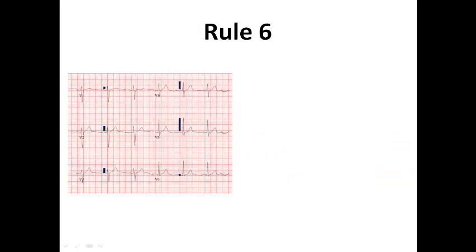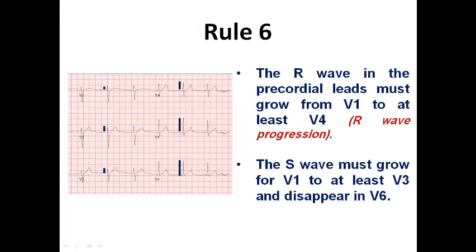Rule number six checks R-wave progression. It dictates that the R-wave in the precordial chest leads must grow from V1 to at least V4. The transitional point — where the R-wave amplitude equals or exceeds the S-wave amplitude — should be reached by V4, though it may occur earlier at V3. This is called normal R-wave progression. The S-wave must also grow from V1 to at least V3, but should disappear by V6, where you find a small initial Q-wave and then a tall R-wave.